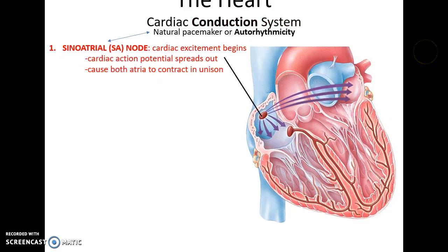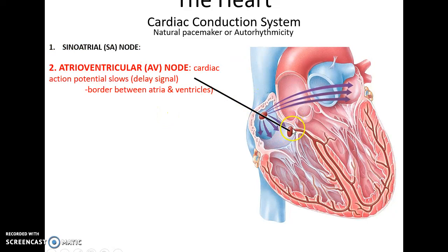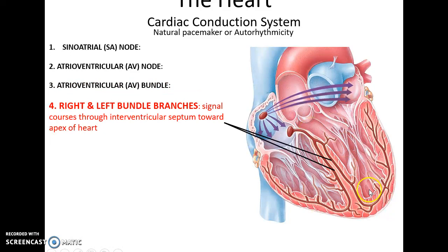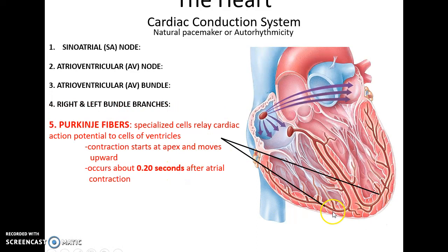The conduction system controls the movement of electrical impulses through the heart to coordinate contractions. It all starts in the sinoatrial node, which causes the electrical impulse to pass through the atrial tissues causing them to contract in unison. The impulse is then delayed at the atrioventricular node, then passes through the atrioventricular bundle into the right and left bundle branches, which go to the apex of the heart. It then enters the Purkinje fibers, which spread the action potential into the ventricular tissues, causing them to contract starting at the apex and moving upward to push blood out. There is typically a 0.2-second delay.